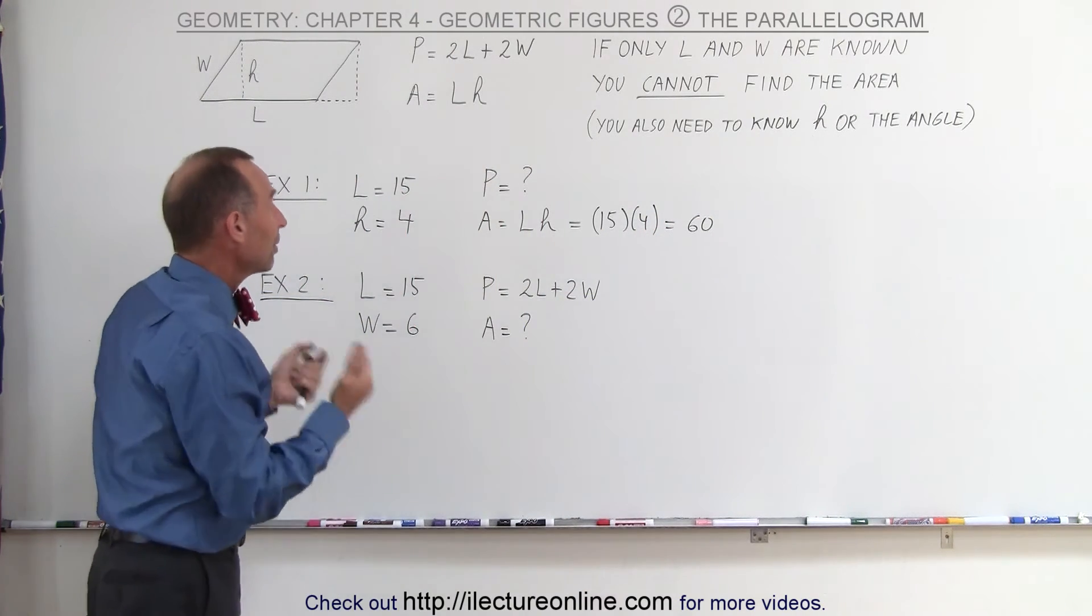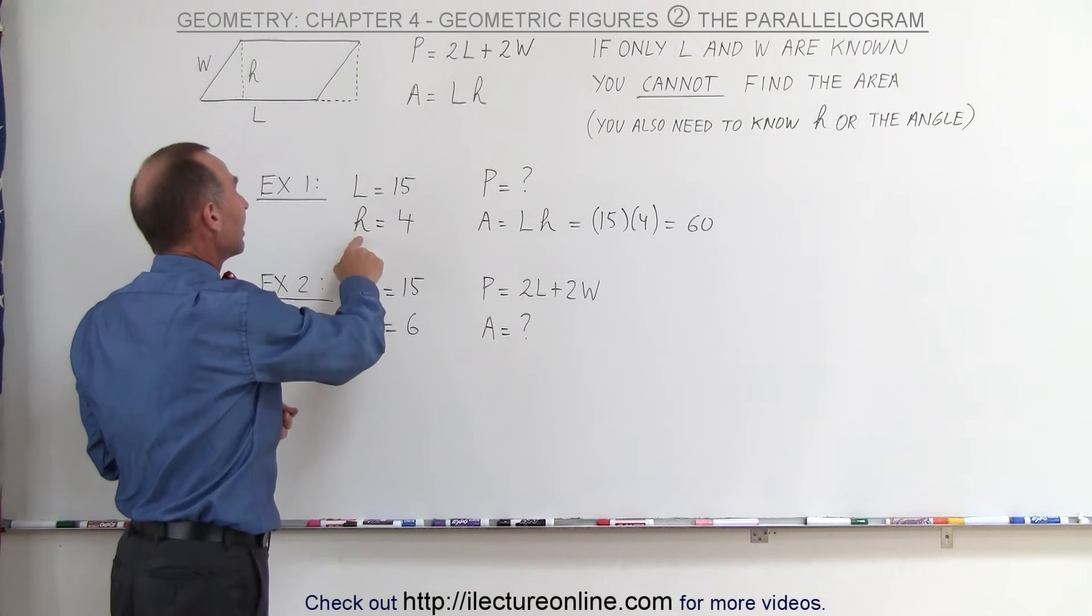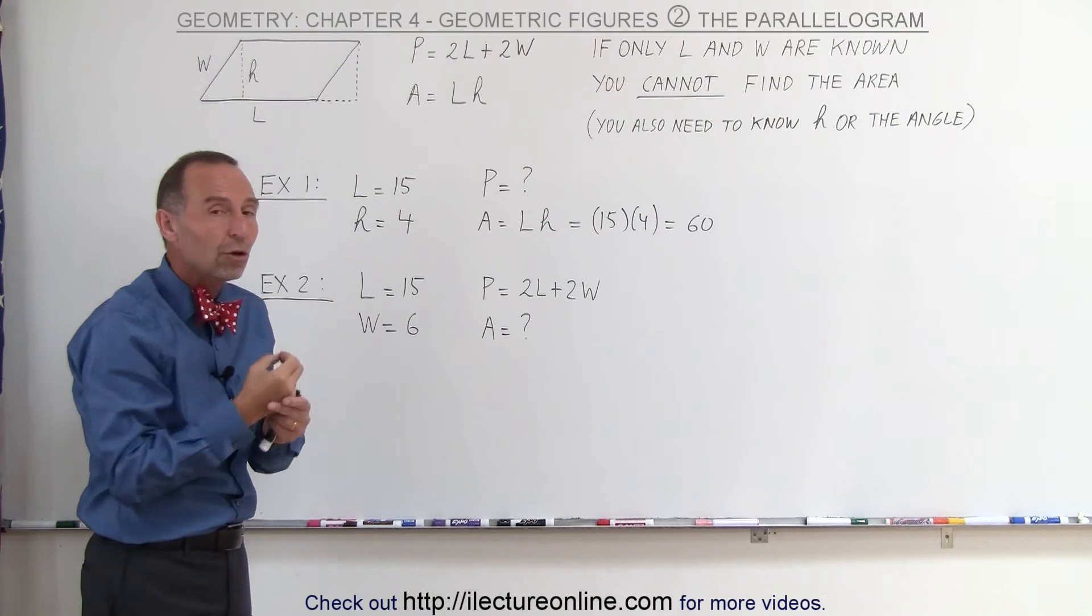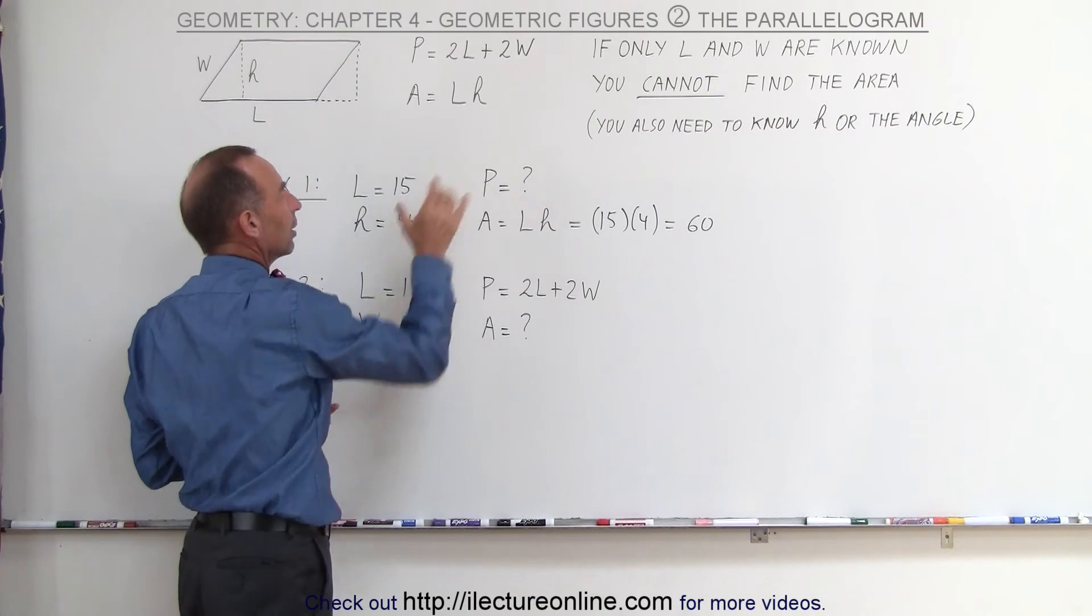However, if they're asking you for the perimeter, you cannot find it by only knowing the length of the long side and the height. You also need to know the length of the short side, W, or you cannot find the perimeter, so this will remain unknown.